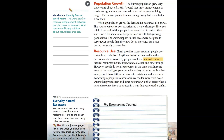Earth provides many materials people use throughout their lives. Anything that occurs naturally in the environment and is used by people is called a natural resource. Natural resources include trees, water, oil, coal, and other things. However, people do not use resources in the same way. In some areas, people use a wide variety of resources; in other areas, people may have little or no access to certain natural resources. For example, people in Central Asia live too far from ocean waters that provide fish. Conflict arises when a natural resource is scarce or used in a way that people feel is unfair.